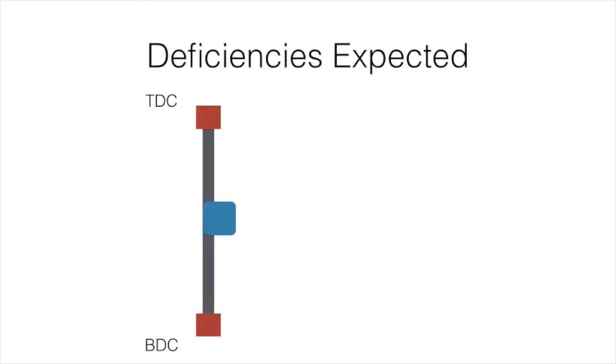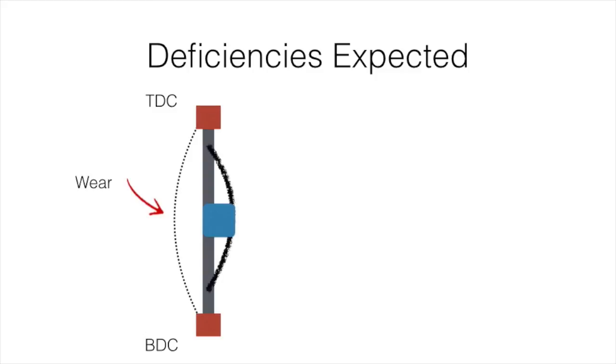Lubrication can be difficult in this setup because no constant oil wedge is formed. As the crosshead runs up and down, there is no constant movement at top dead center and bottom dead center, and thus the oil wedge disappears.